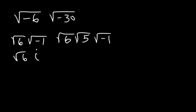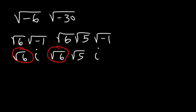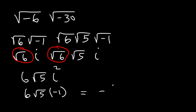The square root of negative 1 is i. The square root of 6 times the square root of 6 is the square root of 36, which equals 6. So we have 6 root 5. i times i is i squared, and i squared is negative 1. So the final answer is negative 6 root 5.